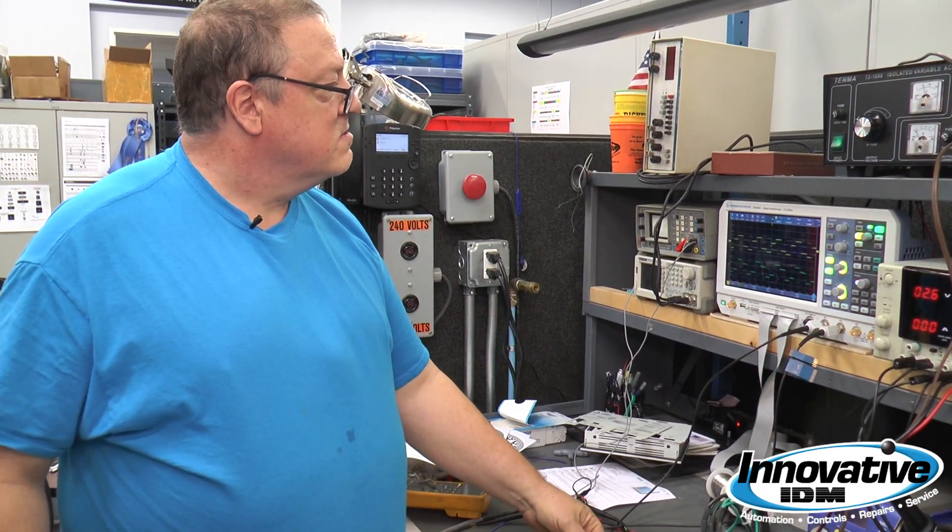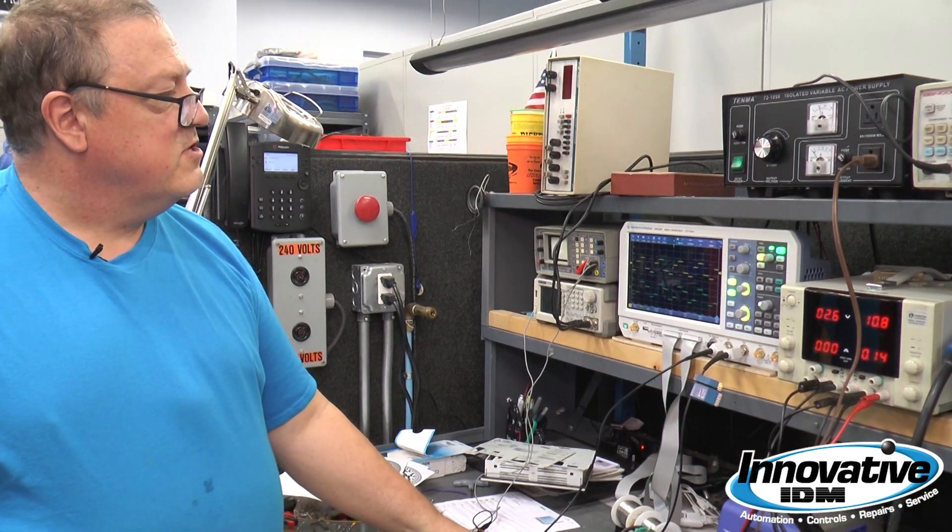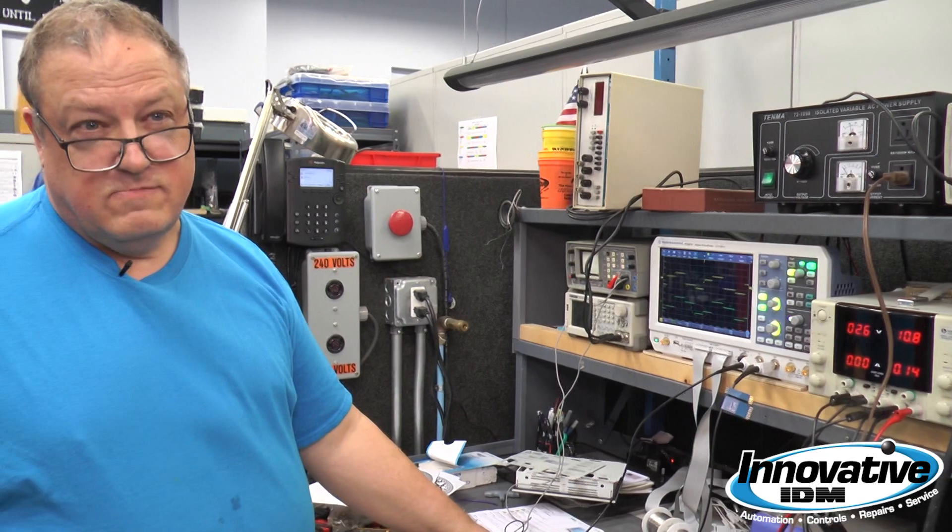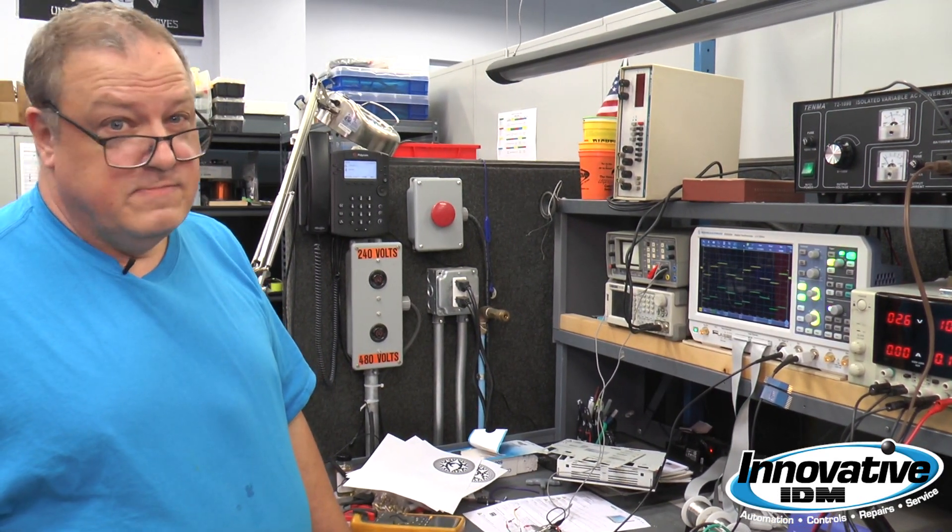You can watch your encoder go up or down if you have an oscilloscope. If someone in your plant doesn't have one, you may want to ask them if they want to invest in one. They're not real expensive and they're definitely helpful in troubleshooting problems.